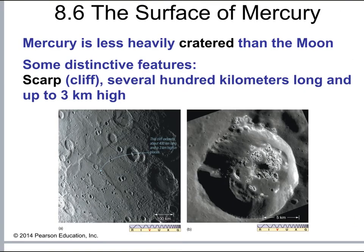While Mercury shares many similar features with the Moon, there are notable differences. Mercury has fewer craters than the Moon, and it also has long cliff-like structures called scarps — several hundred kilometers long and up to 300 kilometers high — that are prominently featured on its surface.